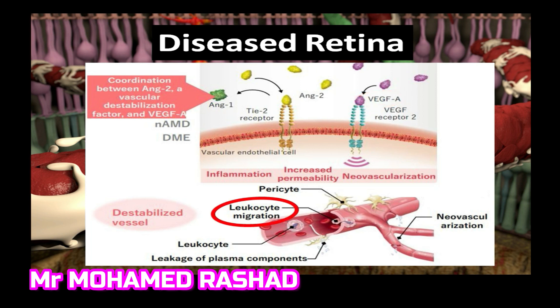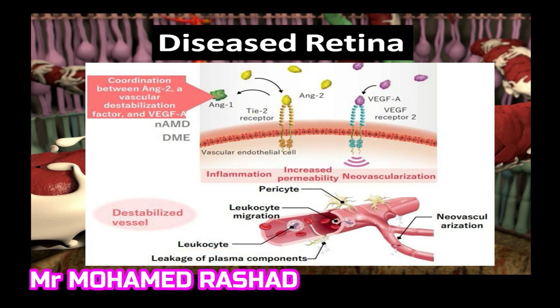This results in leukocyte migration through the weakened tight junctions and leakage of plasma components, causing inflammation, swelling of the retina, and loss of function, in addition to neovascularization initiated by VEGF. So these three processes — inflammation, increased permeability, and neovascularization — are damaging the retina and resulting in loss of function of the retinal cells.